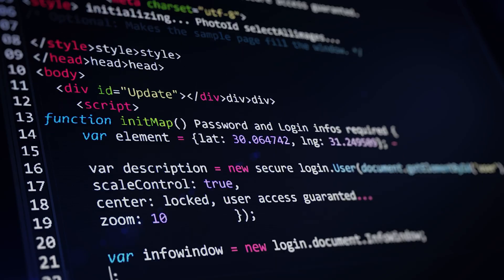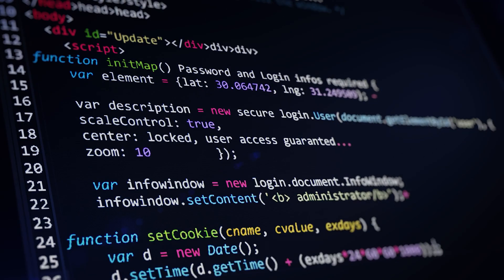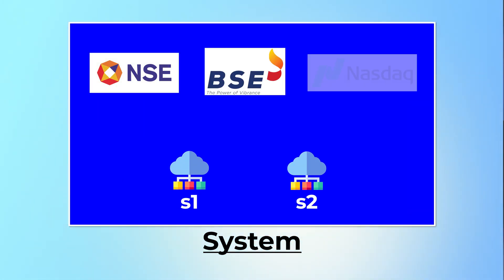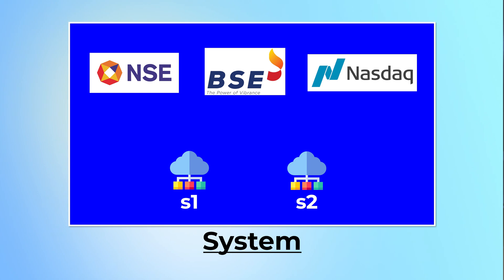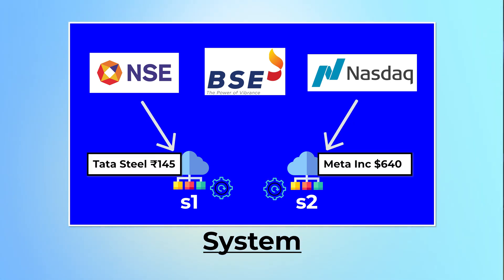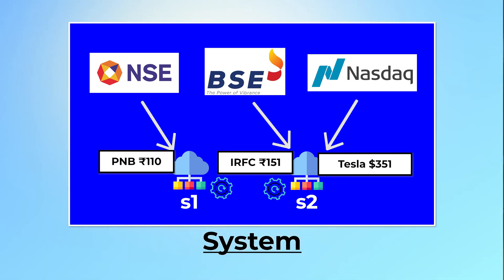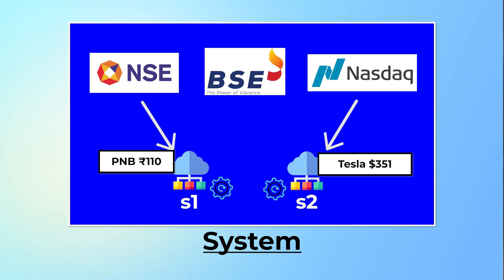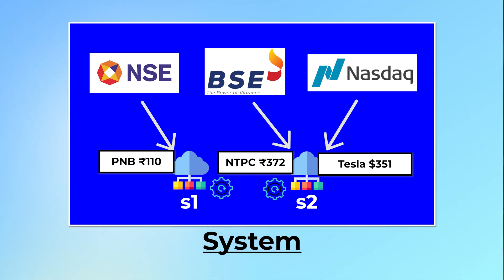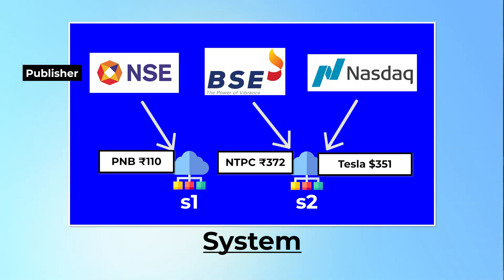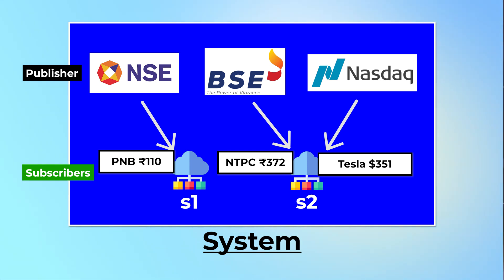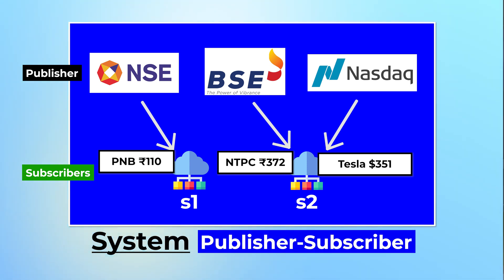Let us take an example. You are trying to build a system which receives the prices of different stocks from different stock exchanges. There are different microservices running on the cloud which receive data from these stock exchanges on a periodic basis, and they may periodically subscribe or unsubscribe themselves from these stock exchanges. If you look at this problem clearly, you find out that there are some publishers and some subscribers — this problem clearly falls under the category of publisher-subscriber design pattern.